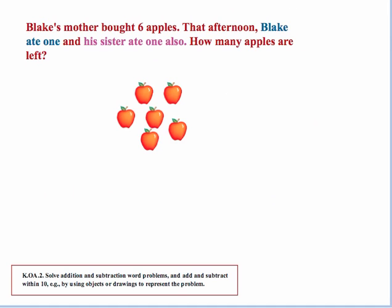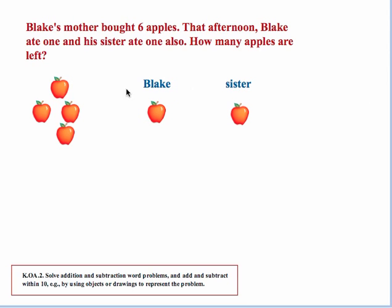Let's try a different problem. Blake's mother bought six apples. That afternoon, Blake ate one and his sister ate one also. How many apples are left? Notice the way this problem is set up — Blake ate one and his sister ate one also. This is deliberately set up this way because in the future students will hit an obstacle when they encounter multi-step problems involving two or more steps. Doing something like this will help them get some experience with that, rather than simply saying Blake ate two apples.